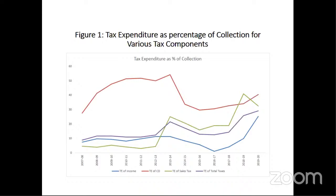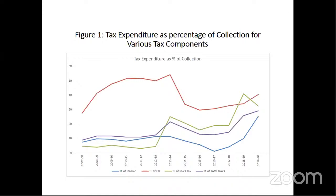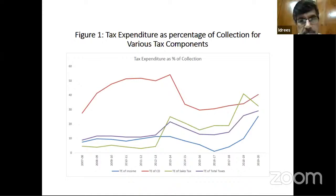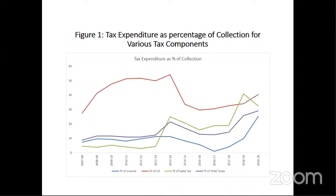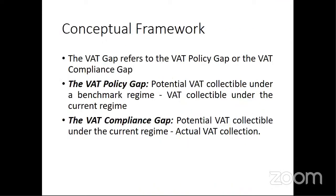What we don't know is our potential sales tax base or VAT base, and we don't know the non-compliance portion. To calculate the overall VAT gap, we must estimate the potential VAT base as well as the non-compliance part. A little about the conceptual framework: the VAT gap refers to the VAT policy gap or the VAT compliance gap. In Pakistan, we have both. The VAT policy gap is tax expenditure created by the government as a policy decision — it represents the potential VAT collectible under a benchmark regime, where every commodity is taxable with no exemptions, preferential treatment, or zero-rating.